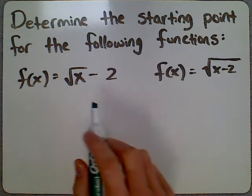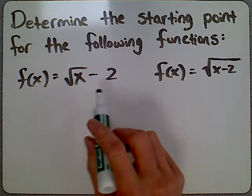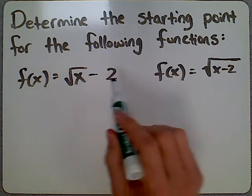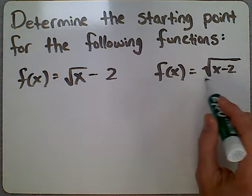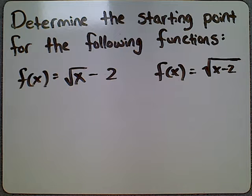In this example we're given two similar functions. This one is the square root of x, then subtracted by 2, and this is the square root of x minus 2, with that minus 2 under the radical.